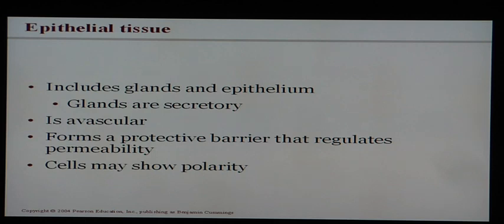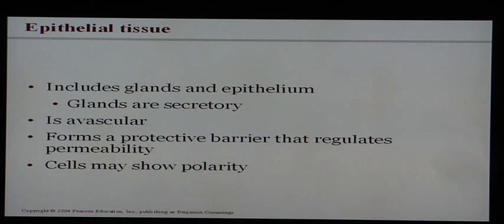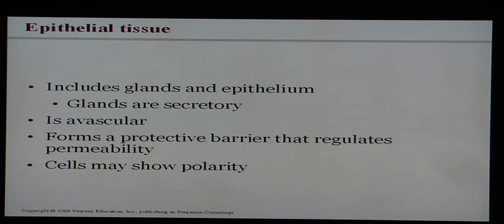Epithelial tissue is avascular — it has no direct blood supply and no blood vessels — which seems unusual for a living tissue. However, it receives all nutrients and oxygen through diffusion, which takes place in the lower layers of tissue below the epithelia. It forms a protective barrier to regulate permeability, keeping what should be out, out, and what should be in, in. Epithelial tissue also exhibits polarity, which we'll see on an upcoming slide.